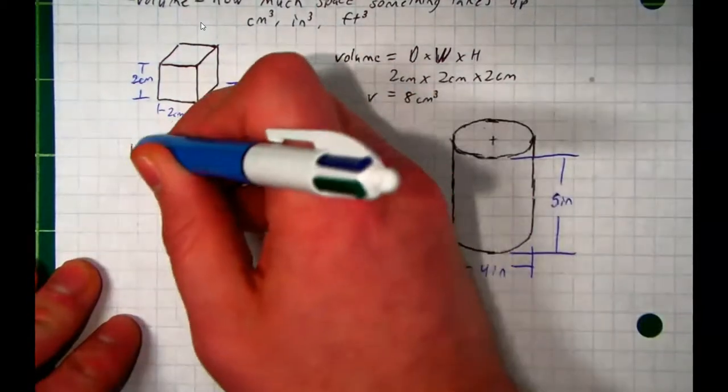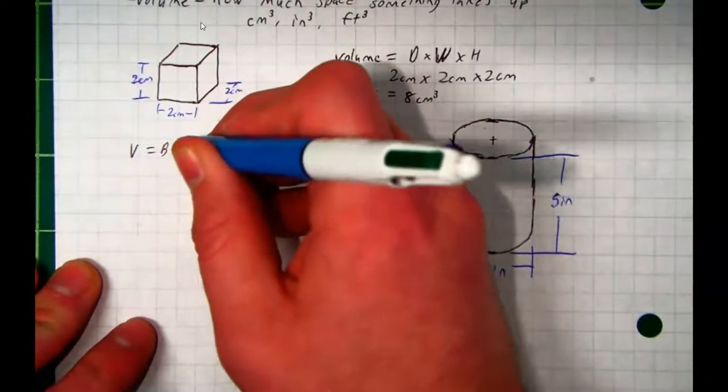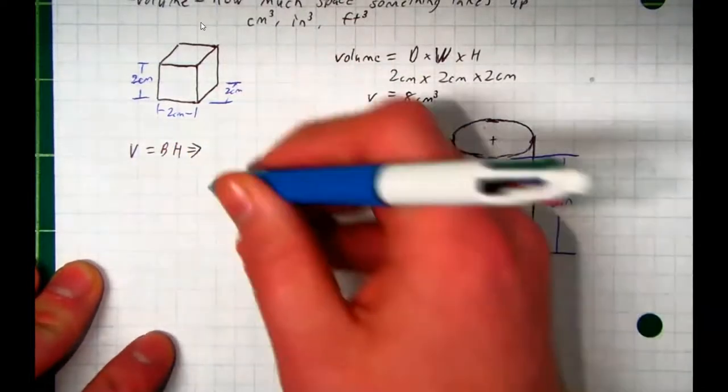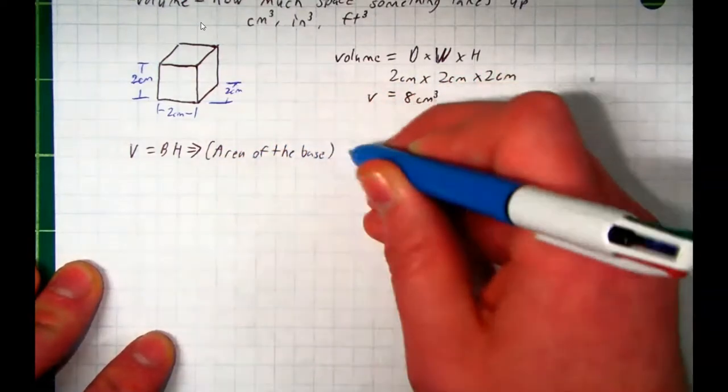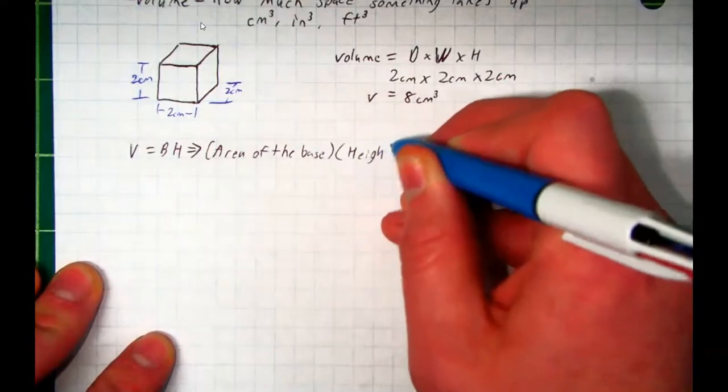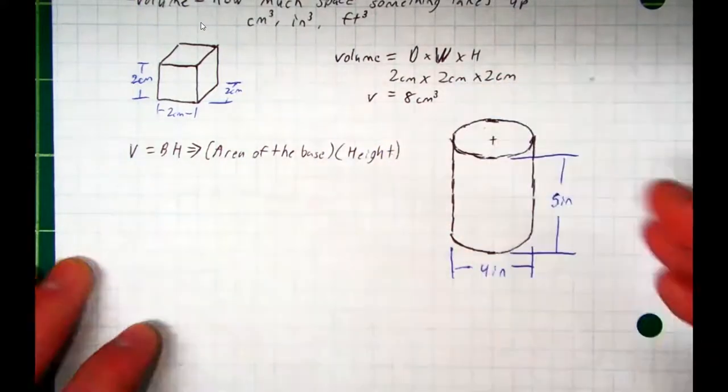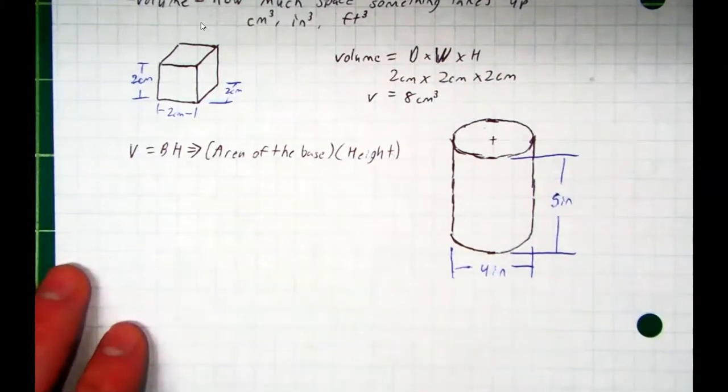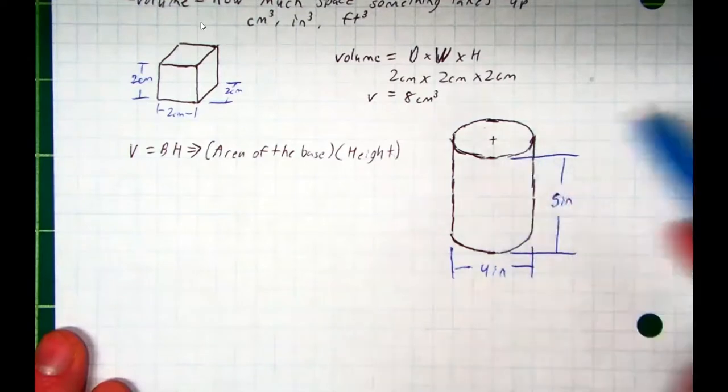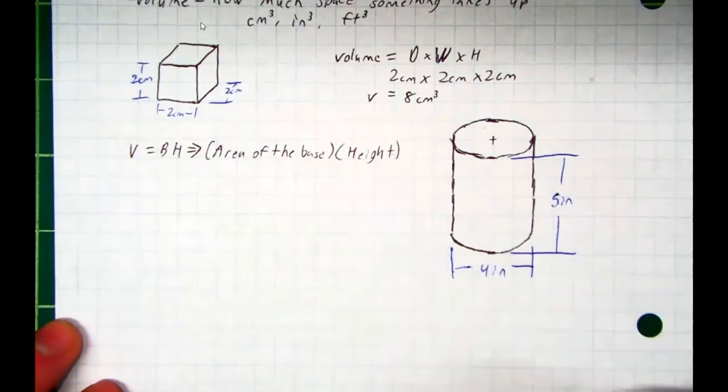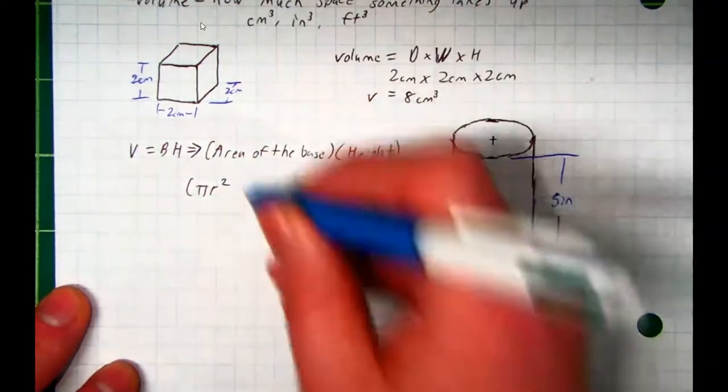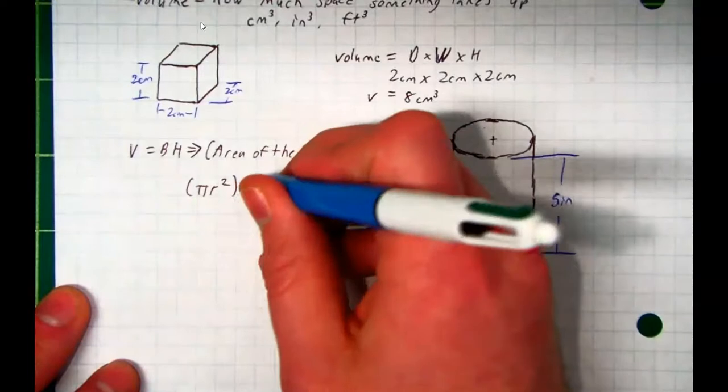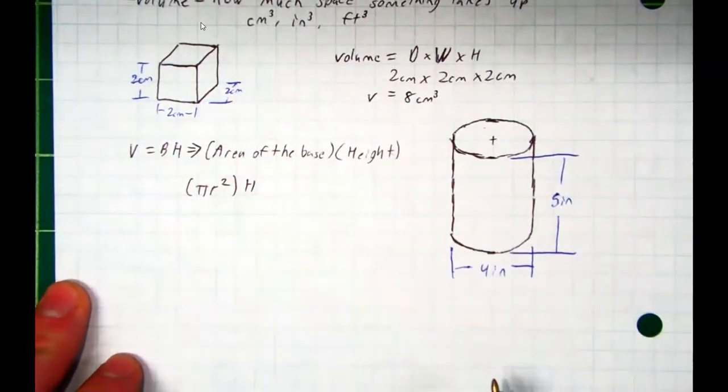So the area of the base times the height—that applies to any formula for any 3D object that is uniform. So, for example, we can write volume equals base times height. And when we say base, what we mean is the area of the base multiplied by the height. And this would be the formula for, again, any 3D object that is uniform. And so what is the area of this—what shape is this base? And what's the formula for the area of a circle? So we multiply the area first, which you said was pi r squared, multiplied by the height. And when we just say h for height, that's it. That's the formula for the volume of a cylinder. You see how I figured it out.